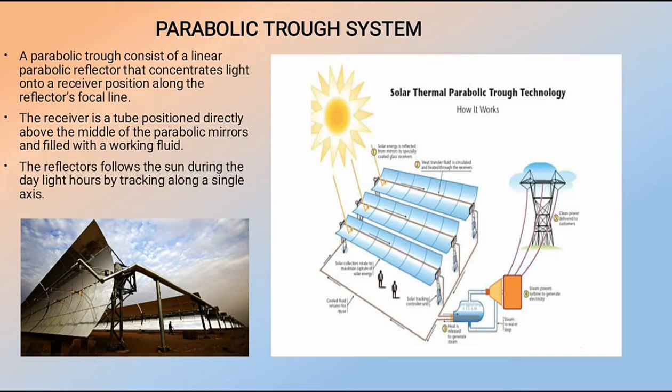The parabolic trough system is a single-axis tracker and line-focus system. Sun's radiation is incident on a linear parabolic reflector that concentrates light onto a receiver along the reflector's focal line. Working fluid passes through the receiver, becomes very hot, passes through a steam generator, and the highly generated steam drives a turbine where about one third of the heat is converted into electricity.